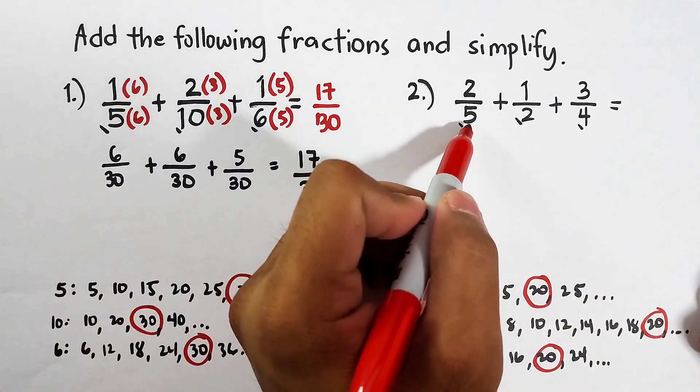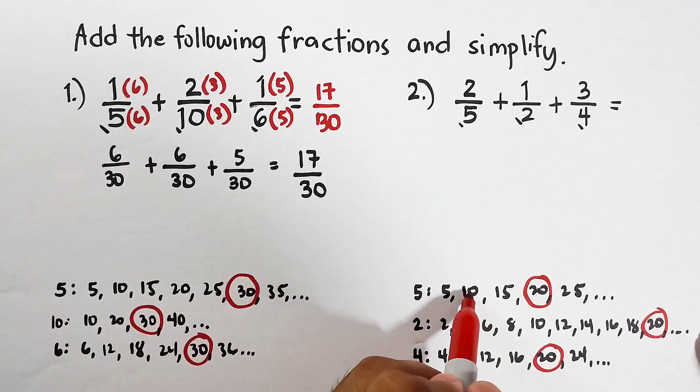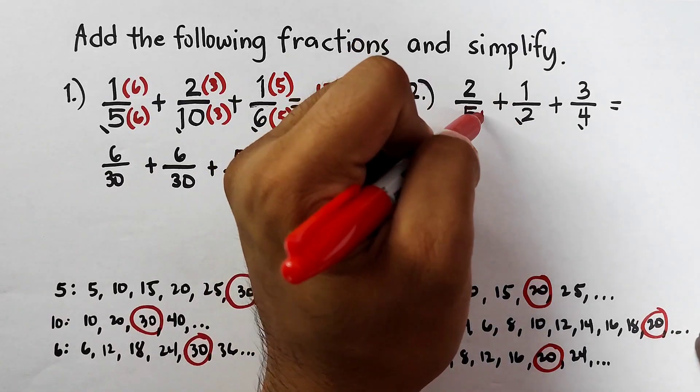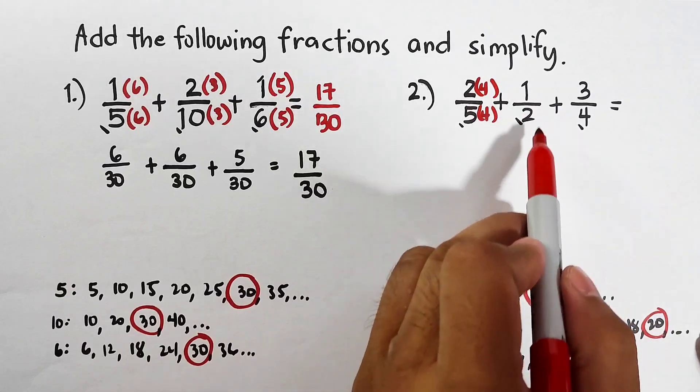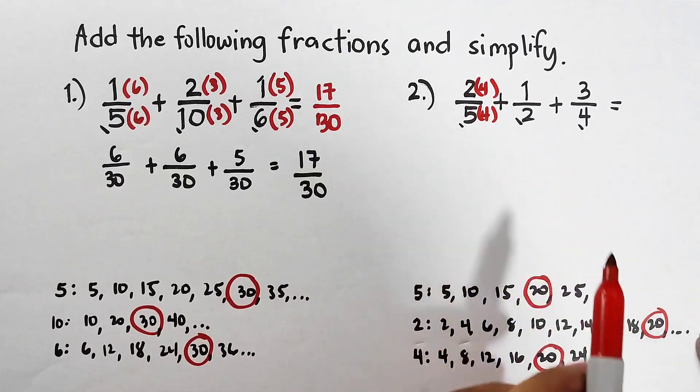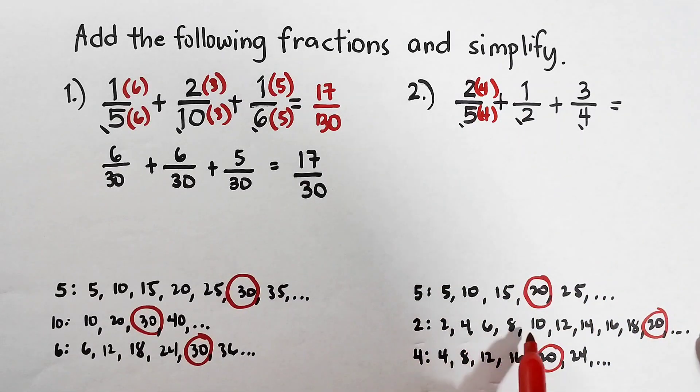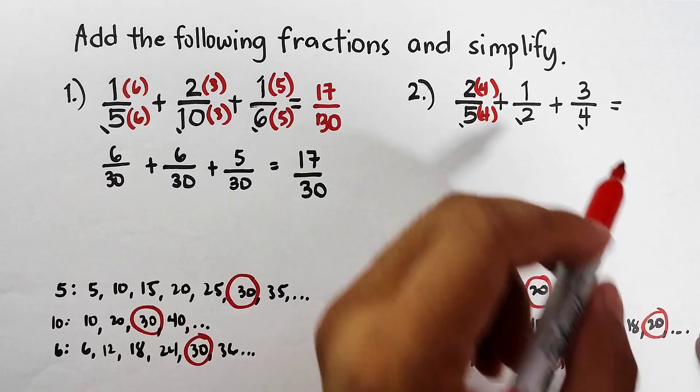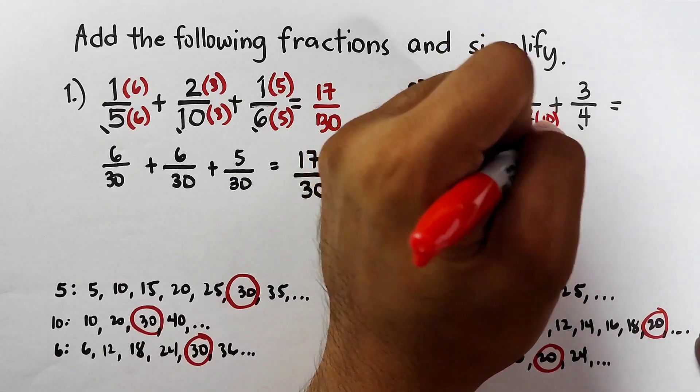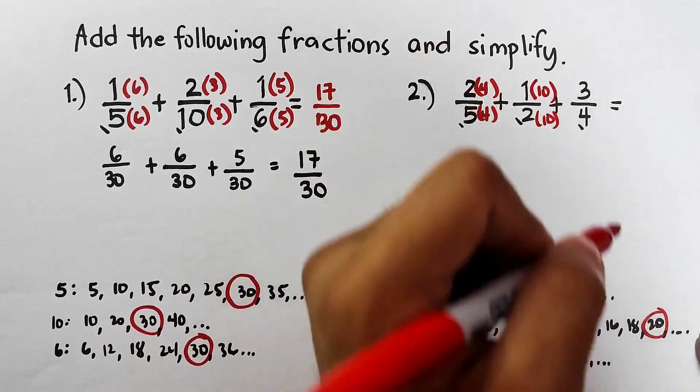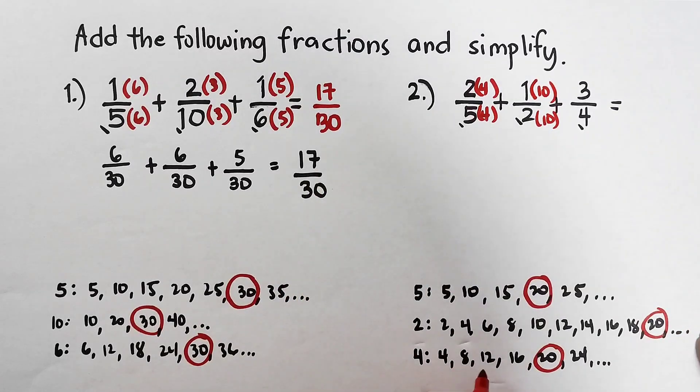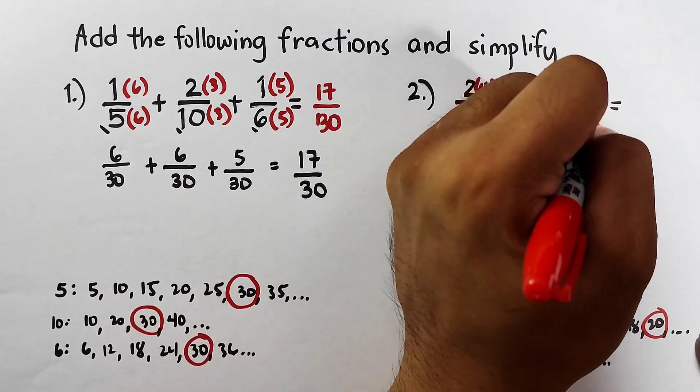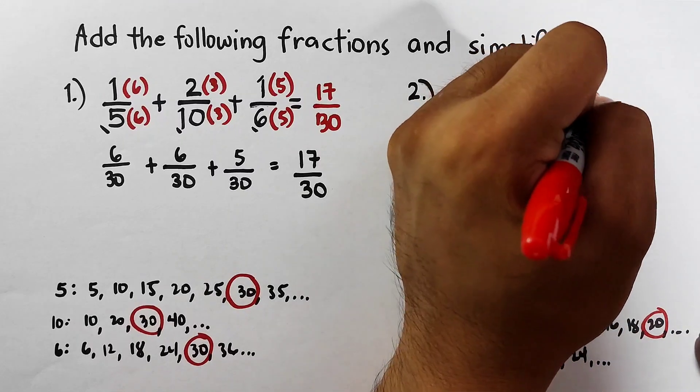We will be thinking, what are we going to multiply by 5 to make it 20? Let's count: 1, 2, 3, 4. We will multiply this by 4 and also this by 4. For the 1 over 2, we will multiply by 10. And for this 3 over 4, multiply this by 5 and also this by 5.